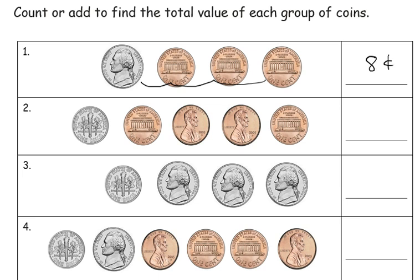Now, some students might see 5 right away for the nickel and 3 pennies and add 5 plus 3 in their heads to get the 8 cents, which is fine. Again, we just want to make sure that they're starting off with 5 and not having to count to 5 to show the nickel.